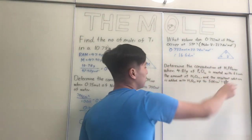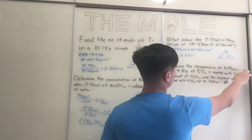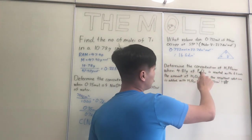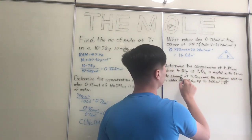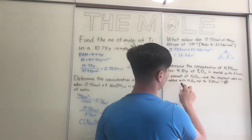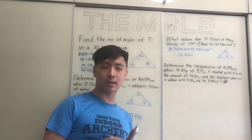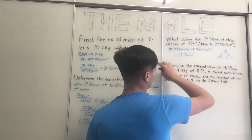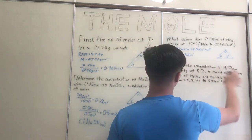You can see how effective the triangle method is: n × V = small v, or small v ÷ large V = N. Now we move to the more difficult question: determine the concentration of H₃PO₄ (phosphoric acid) when 4.81 grams of phosphorus pentoxide (P₄O₁₀) is reacted with 6 times the amount of water (H₂O liquid), and the resultant solution is added to H₂O up to 500 cm³.